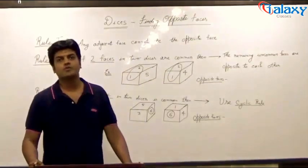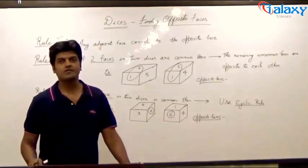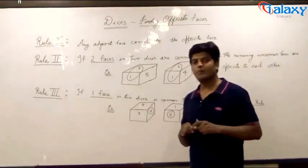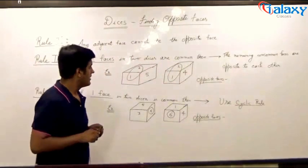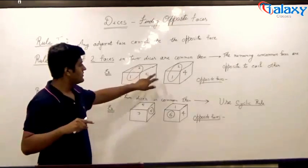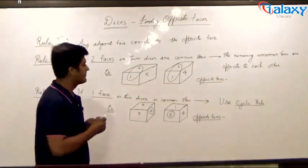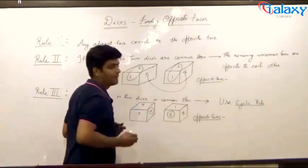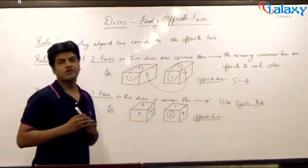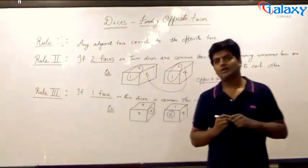Now rule number two involves comparison between the two positions of a dice. If two positions of a dice are given and two faces are common, then the remaining uncommon faces are opposite to each other. Say, here is an example where two positions of the same dice are displayed, and one and two — that is two faces in both the dices — are common. Hence, the remaining faces, that is five and four, are opposite to each other. The only limitation of this rule is that we can only find one pair of opposite faces. However, that limitation is overcome by rule number three.